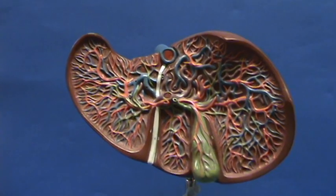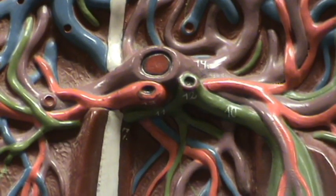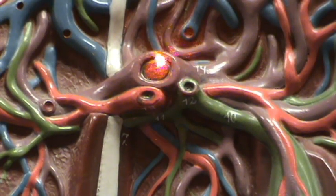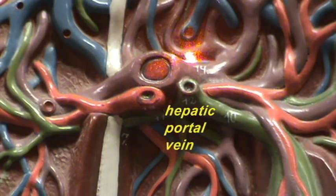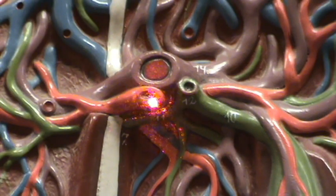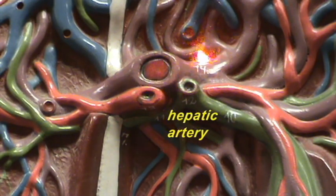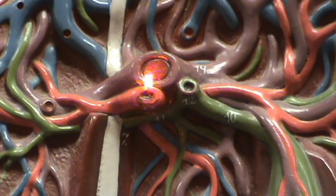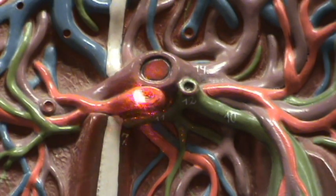If we zoom in on this area, we'll see that there is an important region here by which blood vessels will enter and leave the liver. Right over here we have a fairly large vein which is bringing blood to the liver — this is the hepatic portal vein. And right over here, this vessel which is red in color, this is the hepatic artery. So the blood going to the liver travels by way of two vessels: the hepatic portal vein and the hepatic artery.